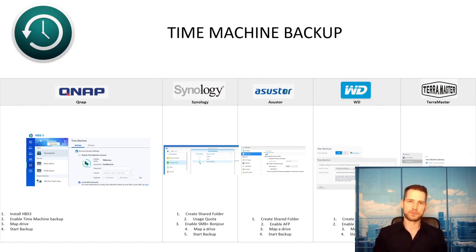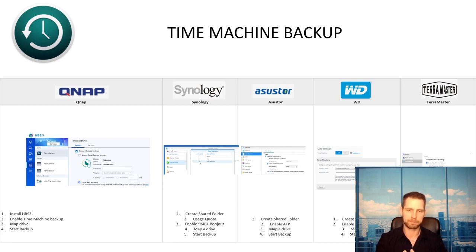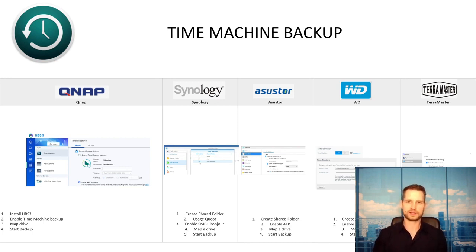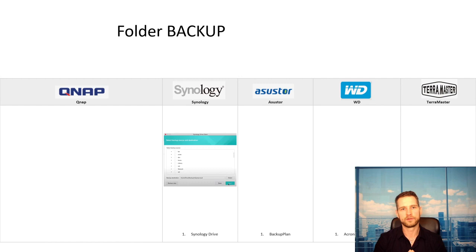WD is like a one-click setup — you just enable Time Machine backups and it prepares everything, though you may need some manual steps if you want a separate folder. TerraMaster is similar: you enable Time Machine with one click and can create a separate folder if you want. Overall, all NAS brands support Time Machine, but QNAP and WD are the easiest. I'd recommend creating a shared folder to keep it separate and secure.